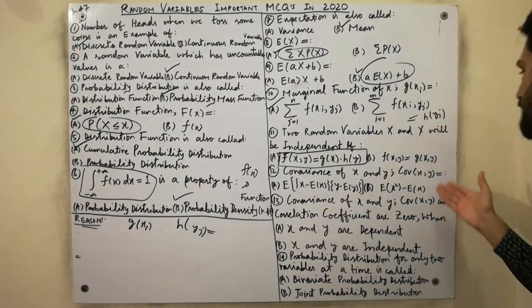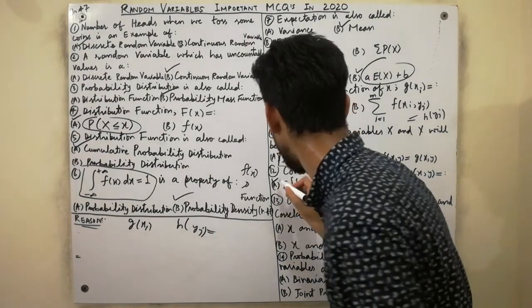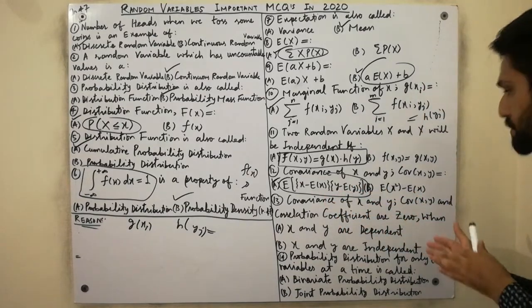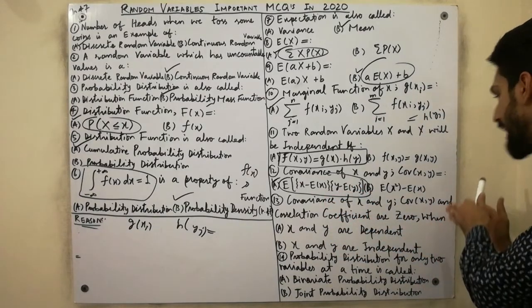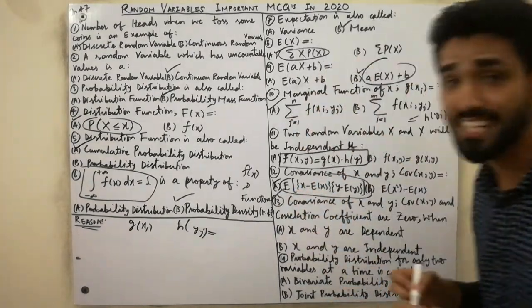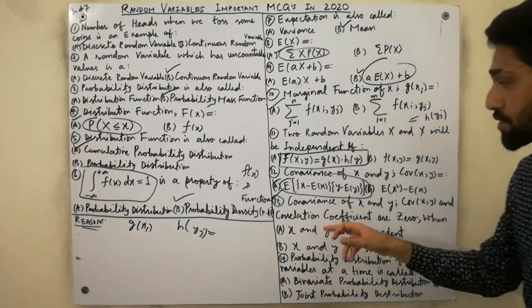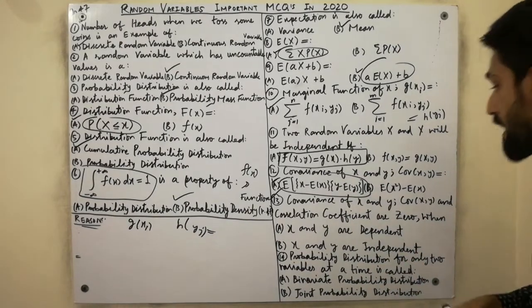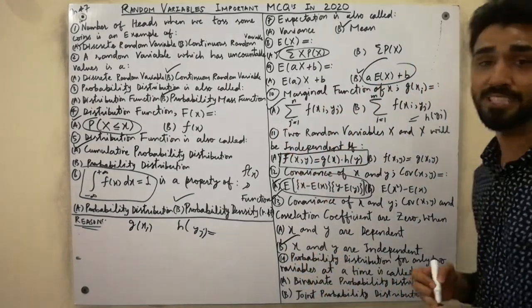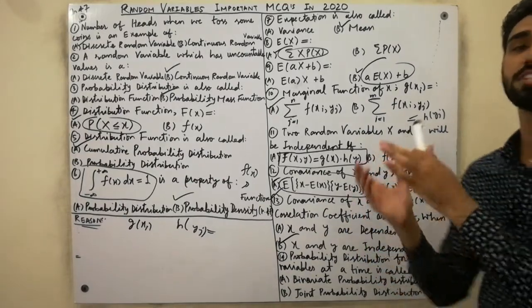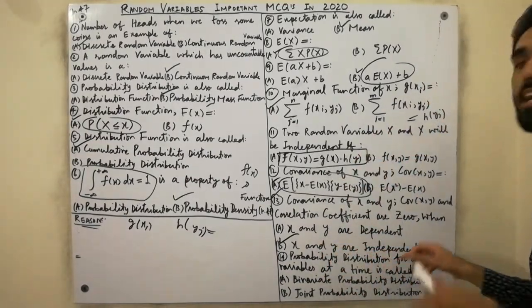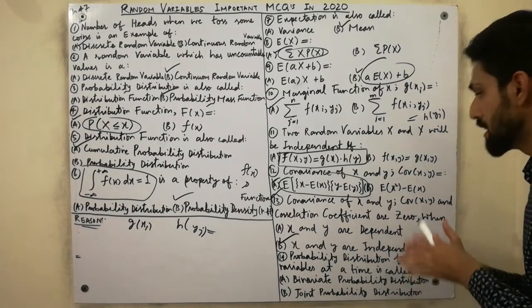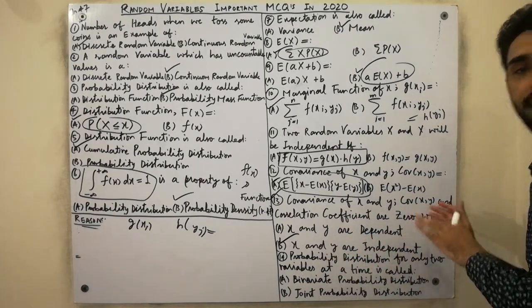The twelfth MCQ: covariance of X and Y is equal to E(XY) minus E(X)·E(Y). The thirteenth MCQ: covariance of X and Y and the correlation coefficient are both zero when X and Y are independent. Remember, you do not need to calculate covariance or correlation coefficient when X and Y are independent, because they will both be zero.